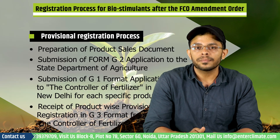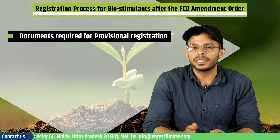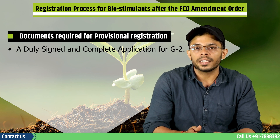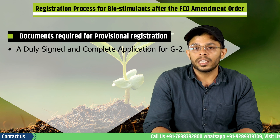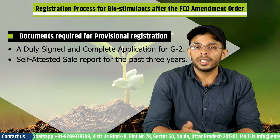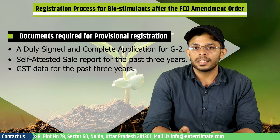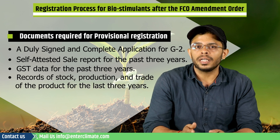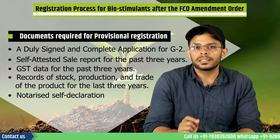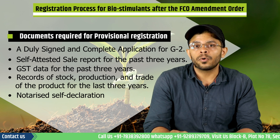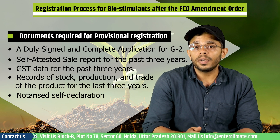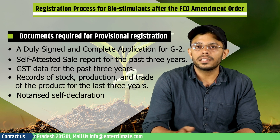Documents required with the application include: a duly signed and complete Form G2 application in the specified format as per the Fertilizer Control Order amendment dated 23 February 2021; self-attested sales reports for the past three years; GST data for the past three years; records of stock, production, and trade for the last three years, all certified by a chartered accountant; and a notarized self-declaration stating there are no reports of adverse or hazardous effects in internationally recognized publications or globally accepted test reports.